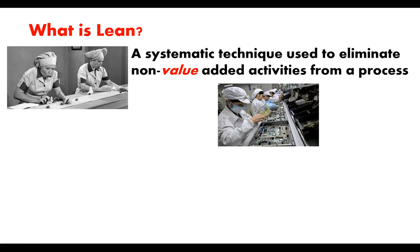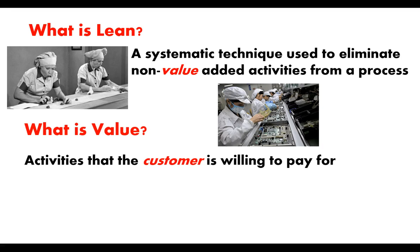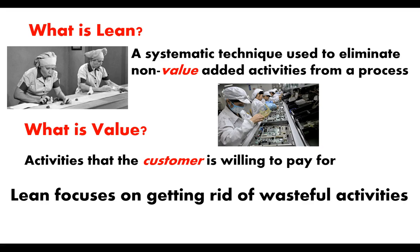Now let's think about what exactly value means — in terms of a business, a manufacturing or any other type of business. Value is activities that the customer is willing to pay for. If someone is going to pay you for it, then there is value in it. If you are not being paid for it but you're still doing it, then you are not adding value. What Lean does is eliminate those things you don't get paid for — wasteful activities, things that don't add value to your customer and don't add to your bottom line.